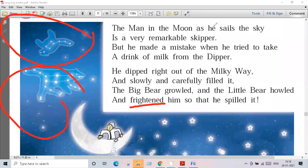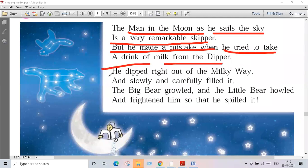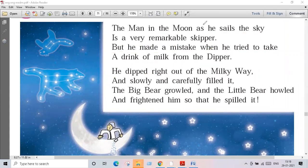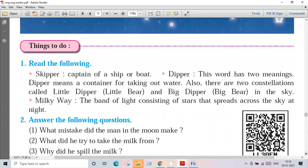So frightened, that means various stars were seen in the sky. So he was the man in the moon. He sails the sky as a very remarkable skipper, but he made a mistake when he tried to take a drink of milk from the dipper. He dipped right out of the Milky Way. He spilled the stars. They were spread over the sky.